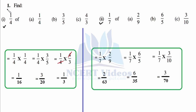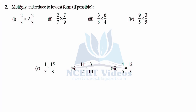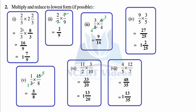Question 2: Multiply and reduce to lowest form if possible. First we have to multiply, then convert into lowest form. The first part is 2/3 into 2, and 2/3 into 2/3, giving 8 over 3.